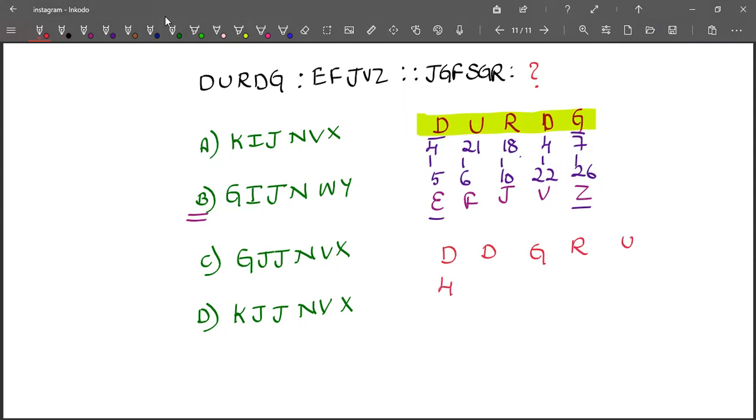What are the corresponding numbers? 4, 4, 7, 18, 21. And now E, F, J, V, Z. E is 5, F is 6, J is 10, V is 22, Z is 26.